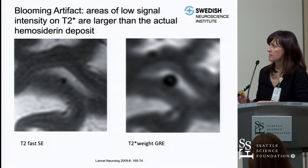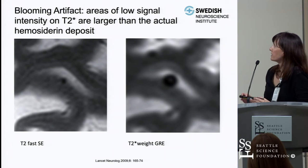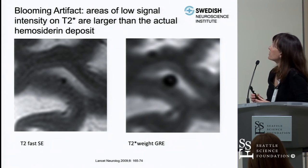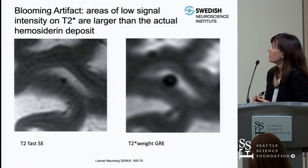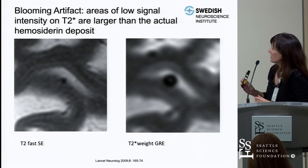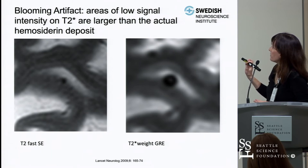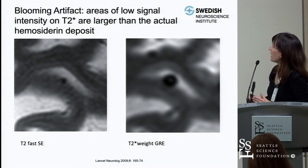This next slide shows an example of blooming artifact. Blooming artifact refers to areas of low signal intensity on T2 star that appear much larger than the actual hemosiderin deposit. On the left is a T2 fast spin echo series where you can see a microbleed if you look carefully, but on the gradient echo that microbleed is much larger in diameter — that is the blooming artifact.